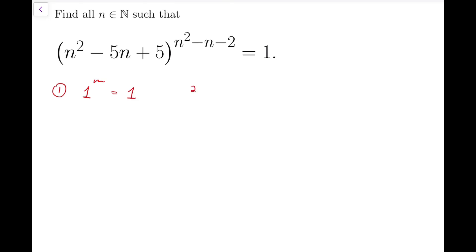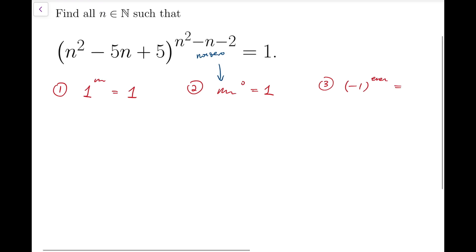And the second case is some number that is non-zero, very important, non-zero, to the power of 0 equals 1. And the third case is that minus 1 all to the power of some even number equals 1. So these are the only three possible cases.